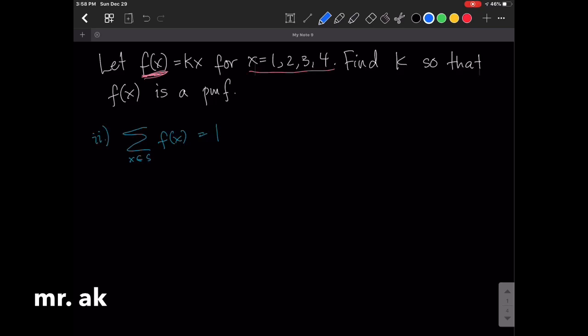So we know that whatever k is, for this function to be a probability mass function, it has to satisfy the second condition. Now, how do we show that this is true and at the same time solve for k?